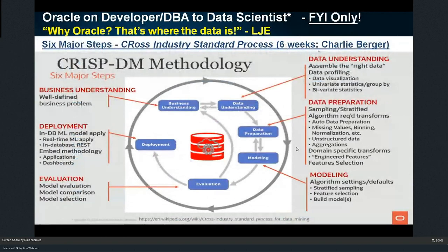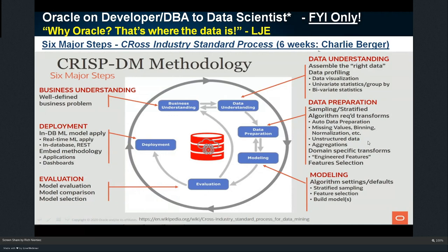As I move toward machine learning, the first thing I have to understand is: what is the business problem? I started at the very beginning — what does your business do, what do you want to achieve, how do you get an advantage, what makes you successful? Define the problems you're trying to solve very well. Then get the right data. Oracle does things like auto data preparation, handling missing values, binning, normalization, and unstructured data aggregations — they've been doing this for a couple of decades. Then I build the model, pick an algorithm, evaluate those models to see if they're working, and deploy.